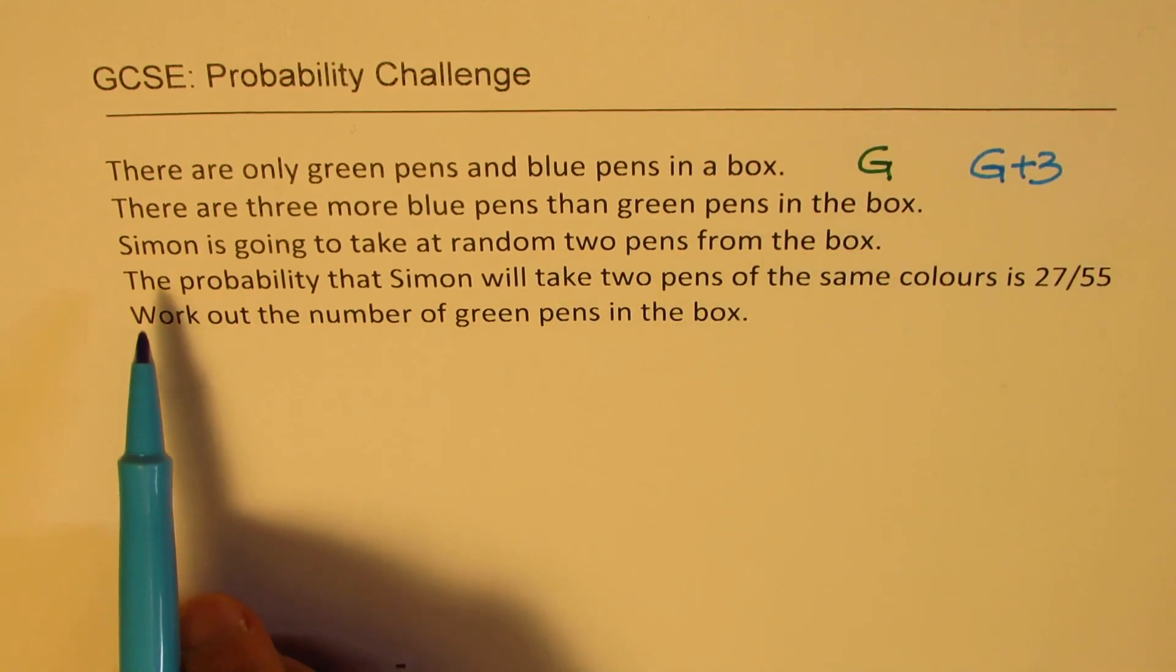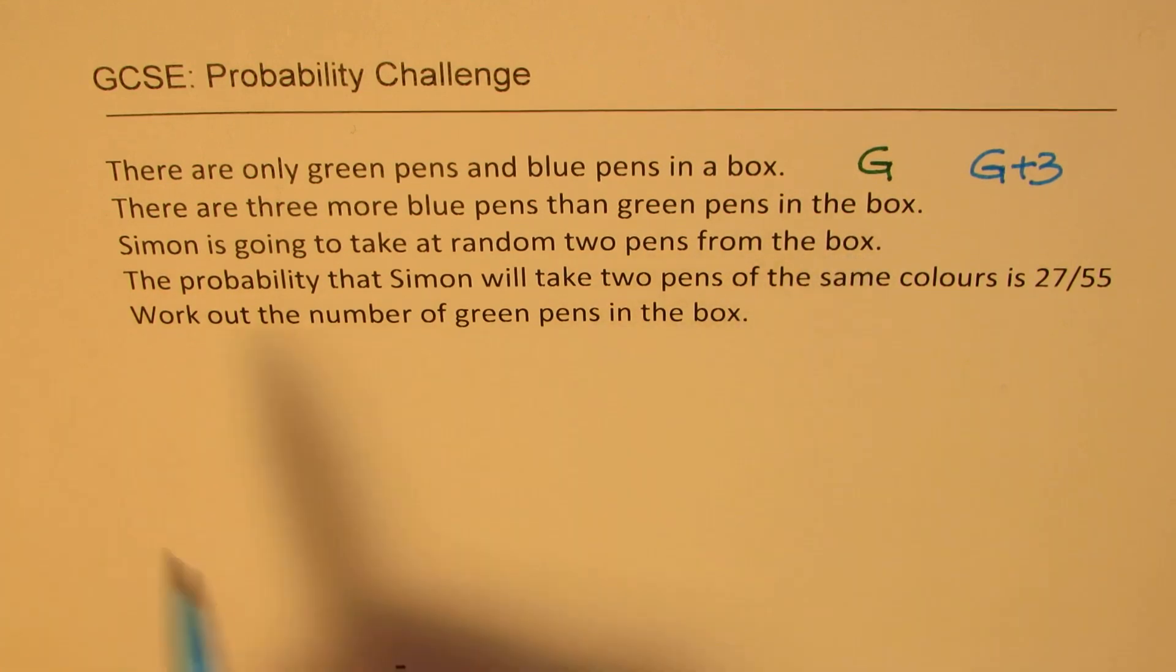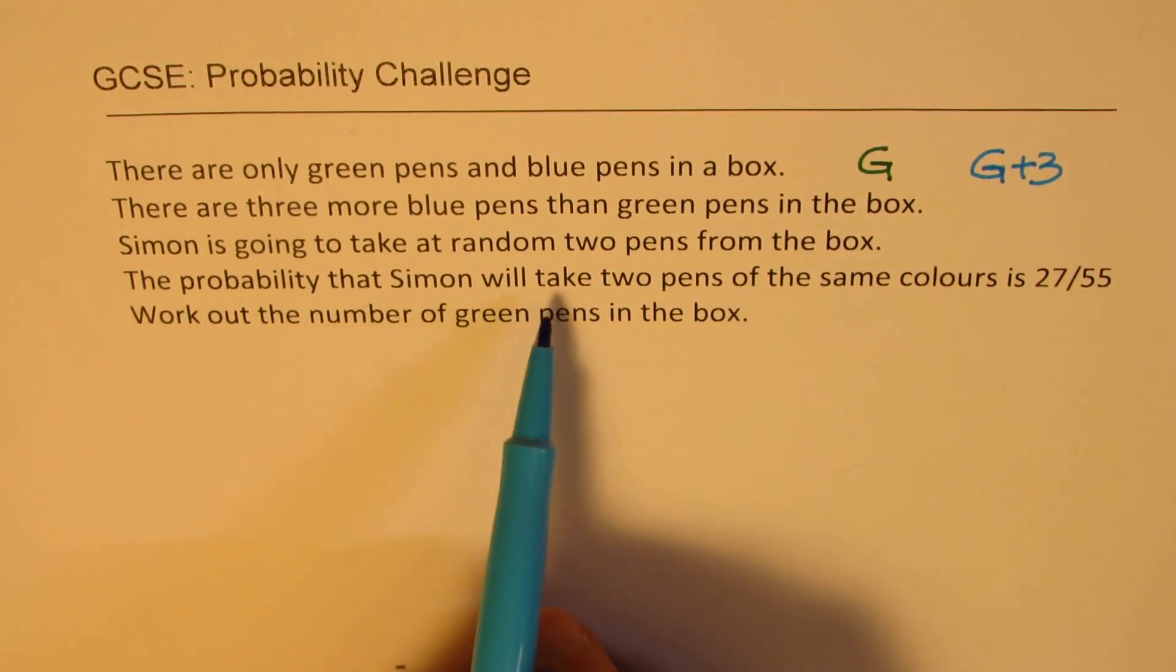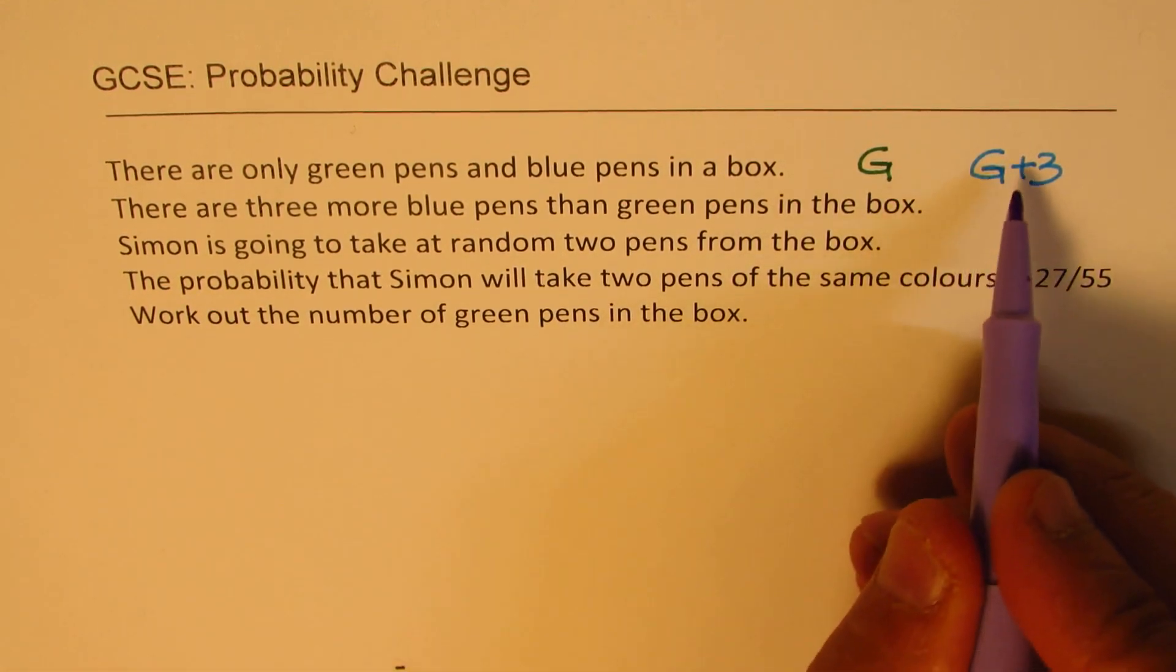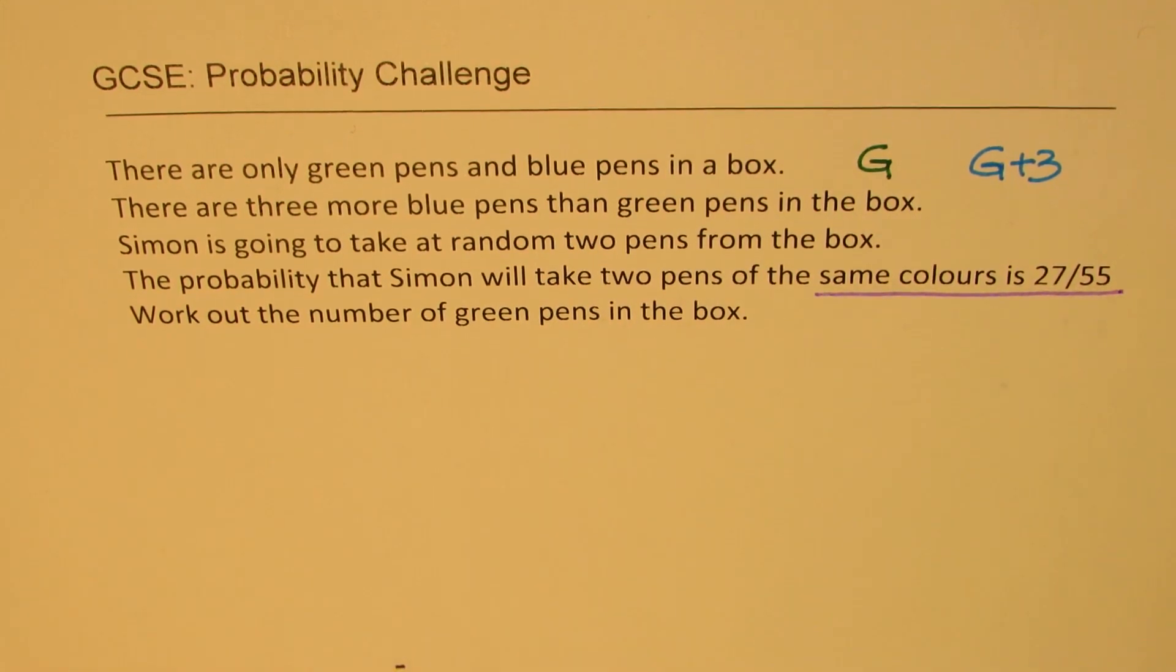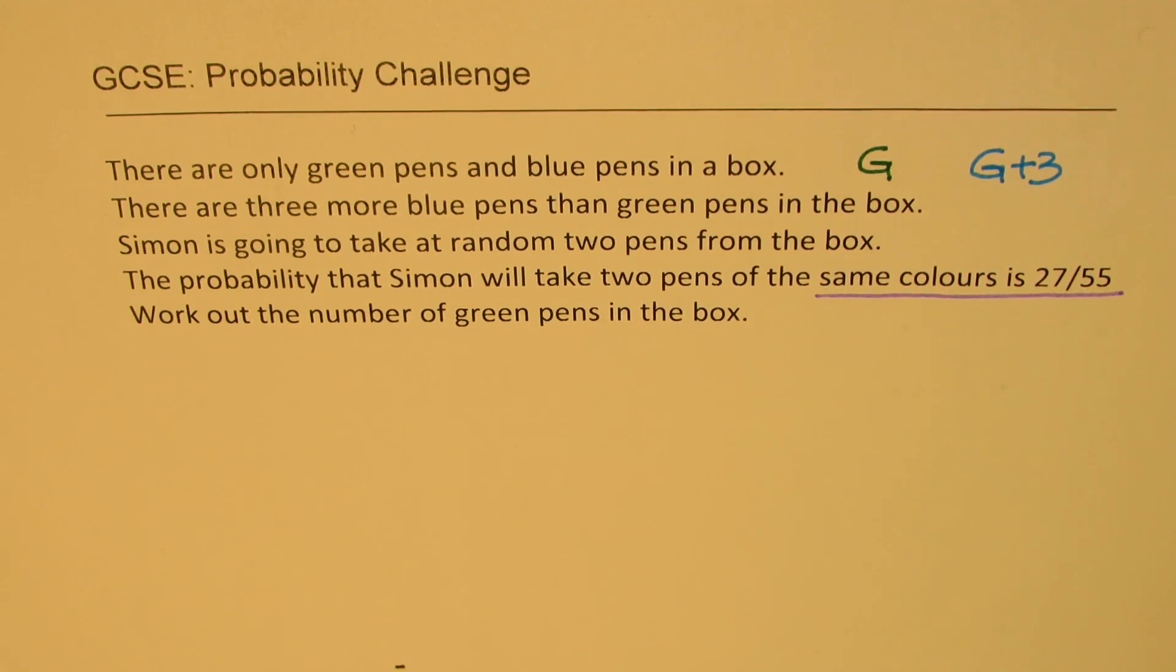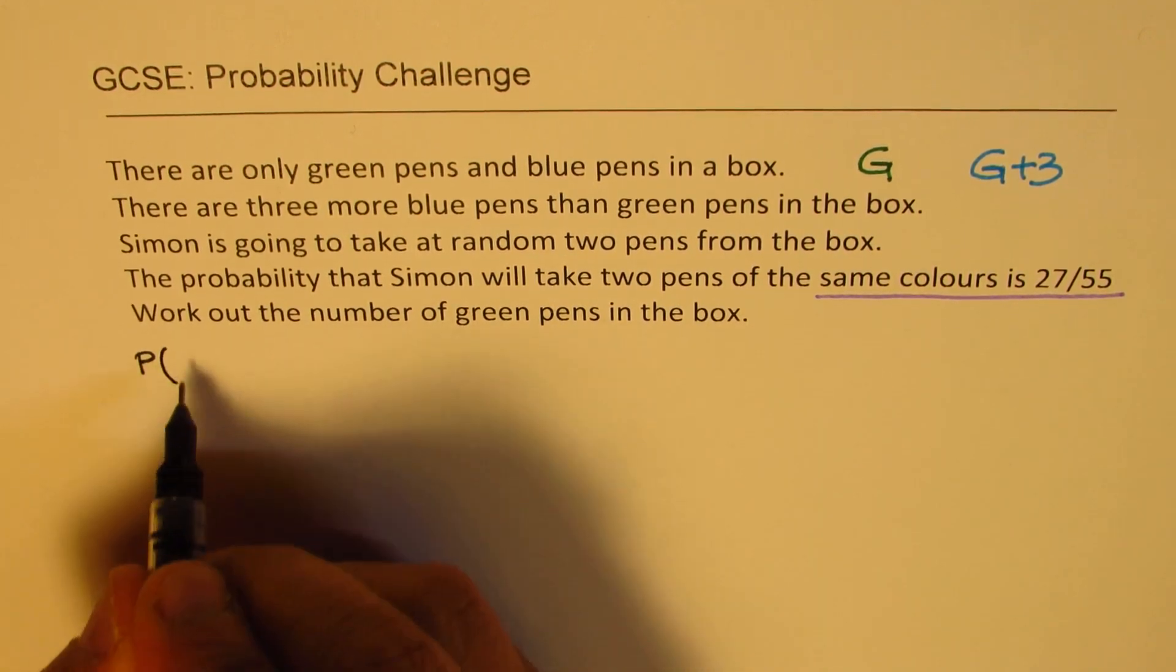We are given Simon is going to take at random two pens from the box. The probability that Simon will take two pens of the same color. We are looking for same color. It could be either two greens or two blues. Same color is 27/55.